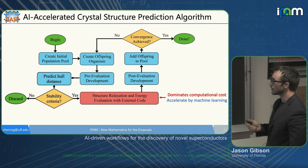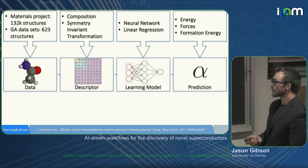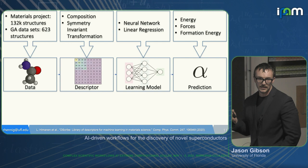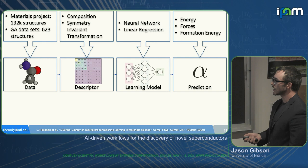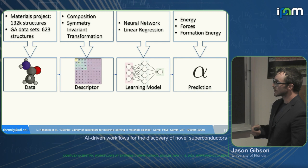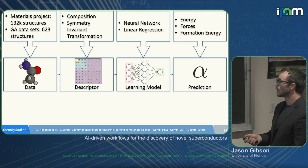For the specific model we trained, we used the Materials Project database, which at the time consisted of about 132,000 crystal structures. We then generated an additional test set from a genetic algorithm structure search, consisting of about 600 structures from the niobium-strontium-hydride material system. We had to decide how to describe the material to the machine learning algorithm. Typically two approaches: applying a symmetry-invariant transformation to the atomic coordinates, or using a compositional-based embedding.